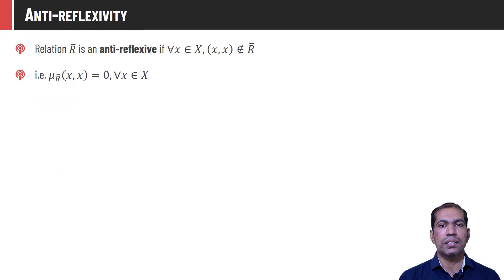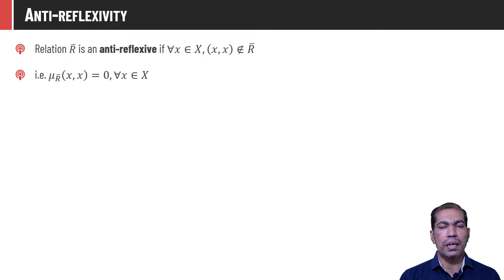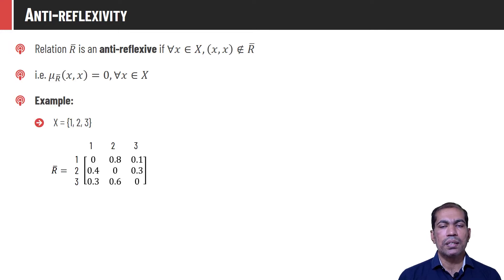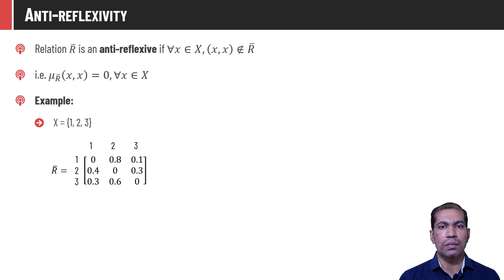The relation R̄ is said to be anti-reflexive if (x, x) is not part of the relation R̄. That is, the membership value of tuple (x, x) in R̄ is 0 for all elements x in the universe X. In this relation R̄, the membership value of every tuple (x, x) is 0, so this relation is an anti-reflexive relation. For an anti-reflexive relation, the diagonal values in R̄ will always be 0, whereas they will be 1 for a reflexive relation.